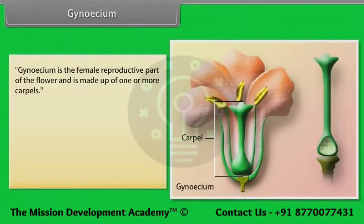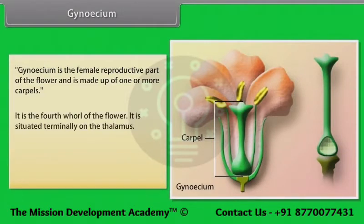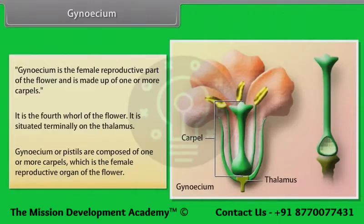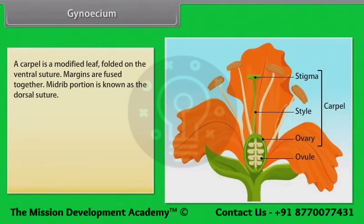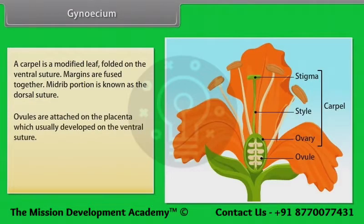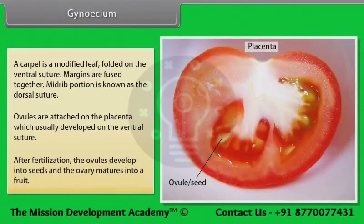Gynoecium is the female reproductive part of the flower and is made up of one or more carpels. It is the fourth whorl of the flower, situated terminally on the thalamus. The gynoecium or pistil is composed of one or more carpels. A carpel is a modified leaf folded on the ventral suture. Ovules are attached on the placenta developed on the ventral suture. After fertilization, ovules develop into seeds and the ovary matures into a fruit.